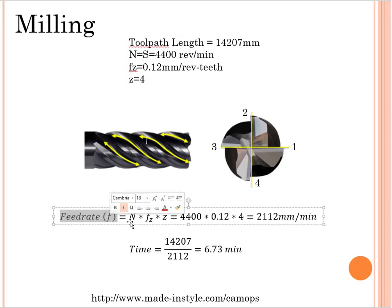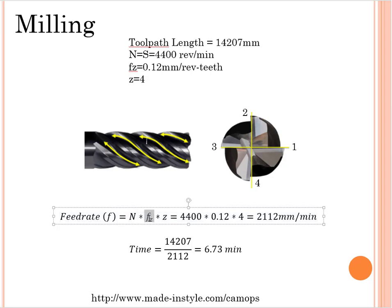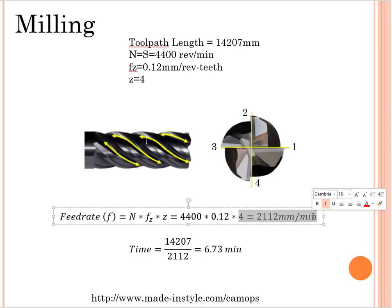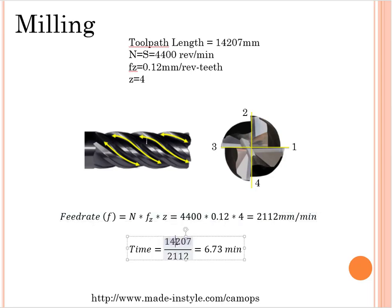According to the feed rate calculation formula, I need to multiply my spindle speed by my feed rate per tooth and by my number of teeth. According to that formula, I can easily calculate my overall feed rate, and from that I can easily calculate my cutting time.